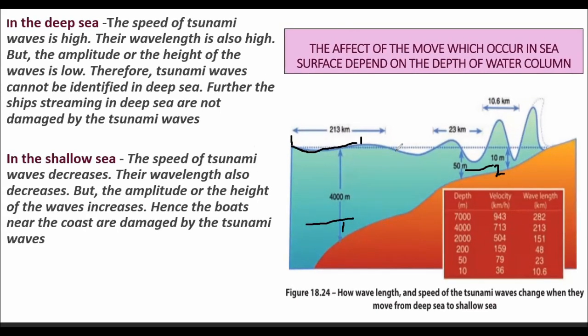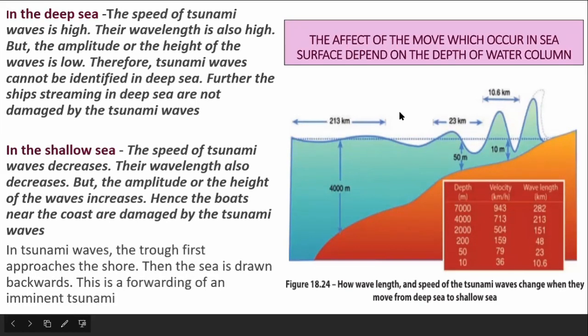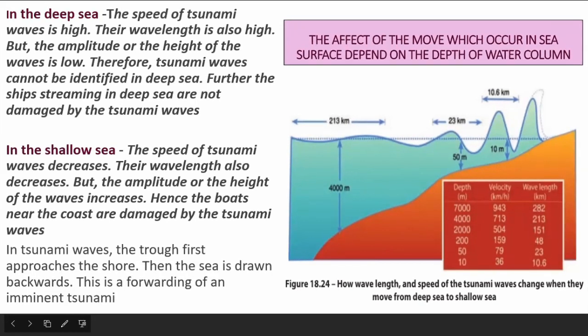In the shallow sea, the speed of tsunami waves decreases and their wavelength also decreases — the distance between one crest to another is less. But the amplitude or height of the wave increases; therefore, boats near the coast are damaged by tsunami waves. In tsunami waves, the trough first approaches the shore — the sea is drawn backwards — and this happened when the tsunami occurred in Sri Lanka. This is a warning of an imminent tsunami.